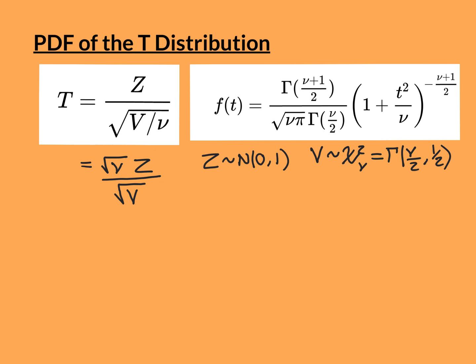A reminder: Z is a random variable distributed as the standard normal, N(0,1). V has a more complicated distribution — it is chi-squared distributed with nu degrees of freedom. This is equivalent to being gamma distributed with parameters alpha equal to nu over 2 and beta equal to one half. We won't prove that here. Importantly, we are assuming that the random variables Z and V are independent.